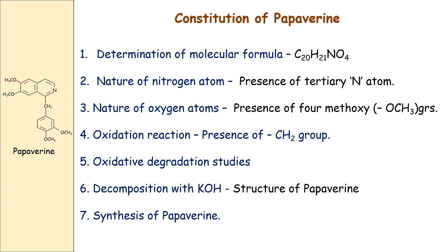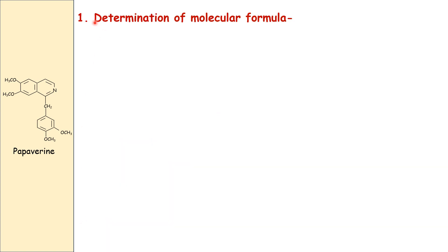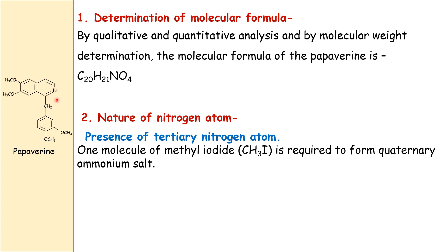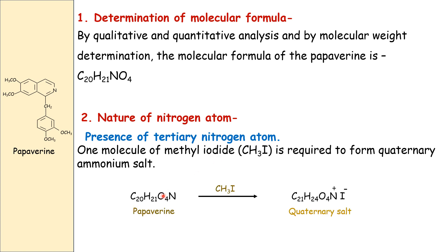First is determination of molecular formula by qualitative and quantitative analysis and by molecular weight determination. The molecular formula of papaverine is C20H21NO4. Next, nature of the nitrogen atom: we prove the tertiary nitrogen atom. One molecule of papaverine requires one molecule of methyl iodide to form a quaternary ammonium salt, which indicates the presence of a tertiary nitrogen atom.